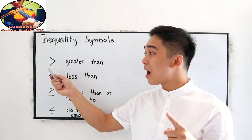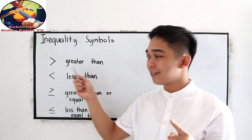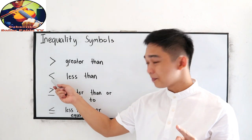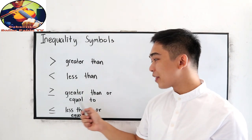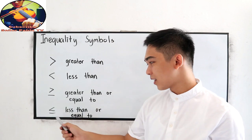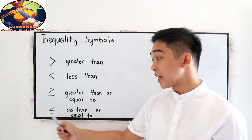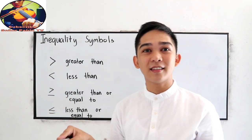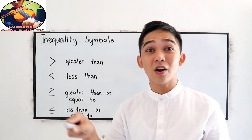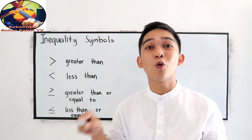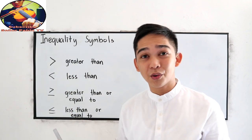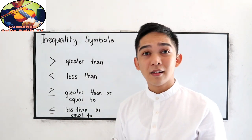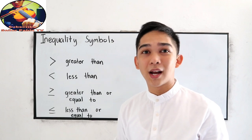First, we have the greater than symbol, the less than symbol, greater than or equal to, and less than or equal to symbol. Aside from grades 7, 8, and 9, for grade 11 you also have the rational inequalities. So watch this video and understand the different signs in inequalities.